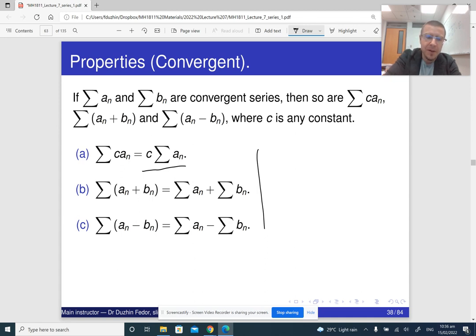So if you have the series, the sum of a_n plus b_n, and you know that this series converges and the b series converges.